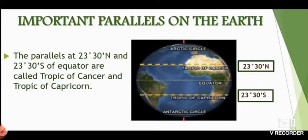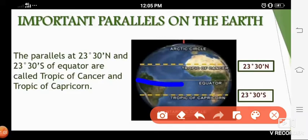Here you can see a picture of the earth on the screen. At the center you are having a parallel shown with a blue line — this is the 0 degree parallel. It is called the equator, and you know that the equator divides the earth into two equal parts. Because of it we have two hemispheres: the upper one is called the northern hemisphere and the lower one is called the southern hemisphere. The equator is one of the important parallels, at 0 degrees.